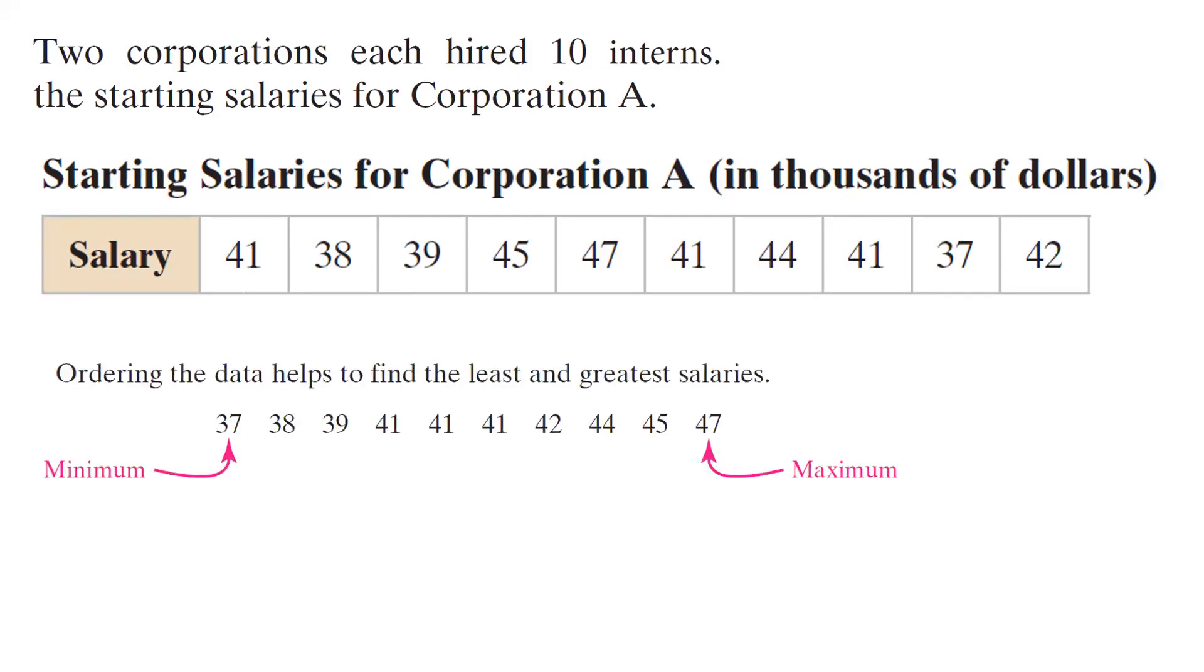We're going to arrange the data to find the minimum and the maximum salaries. Then following the formula for the range, the maximum salary, which is $47,000, minus the minimum salary, which is $37,000, gives you 10. So the range of the salaries is $10,000.